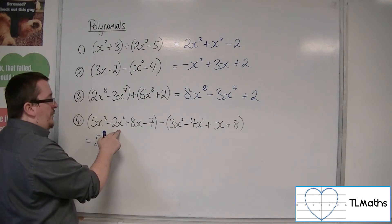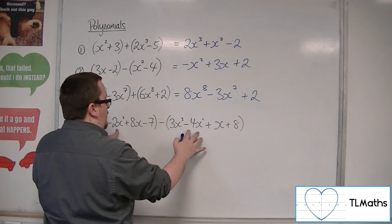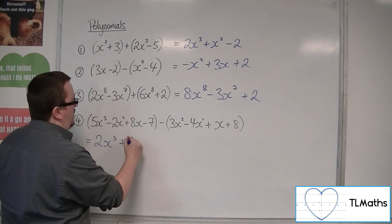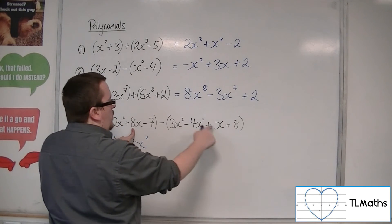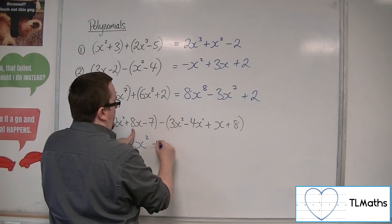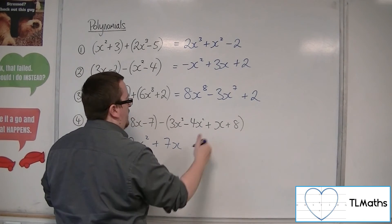We've got minus 2x squared, take away minus 4x squared, so plus 4x squared. So that will leave us with positive 2x squared. We've got 8x, take away 1x, so 7x. And then minus 7, take away 8, so minus 15.